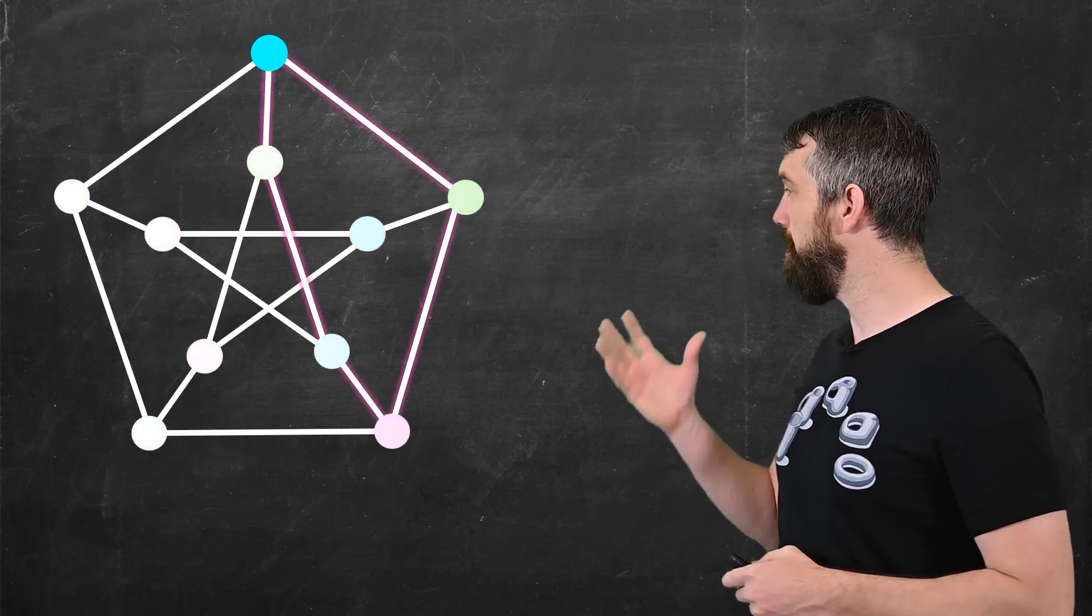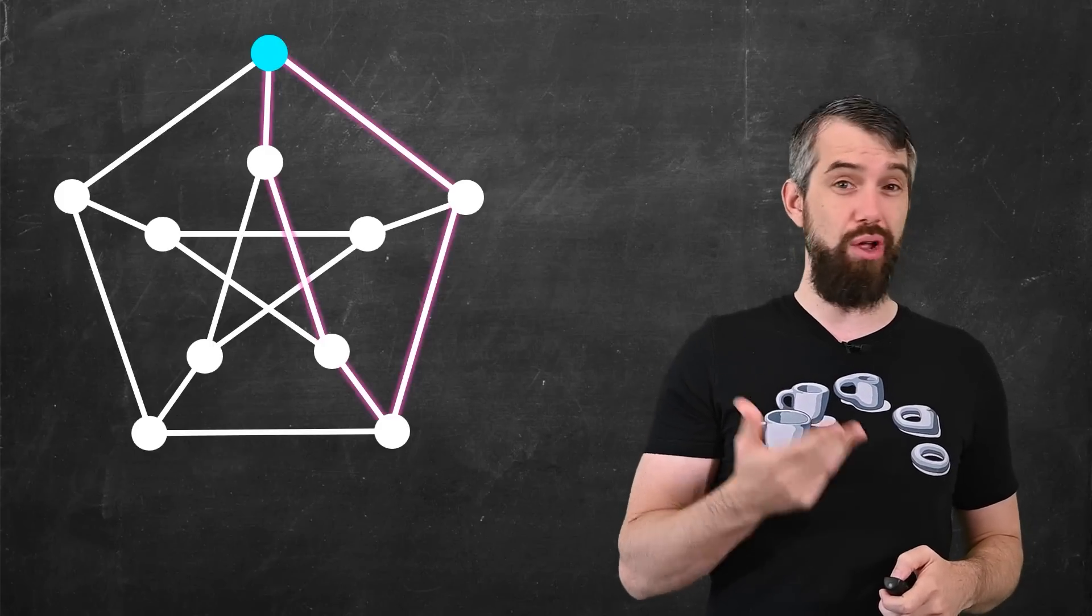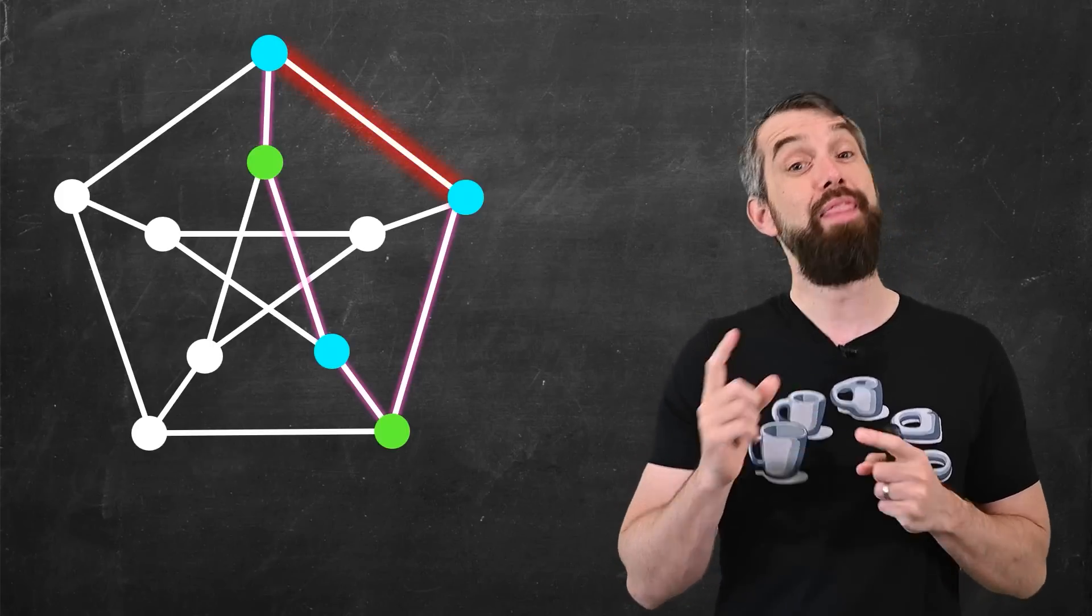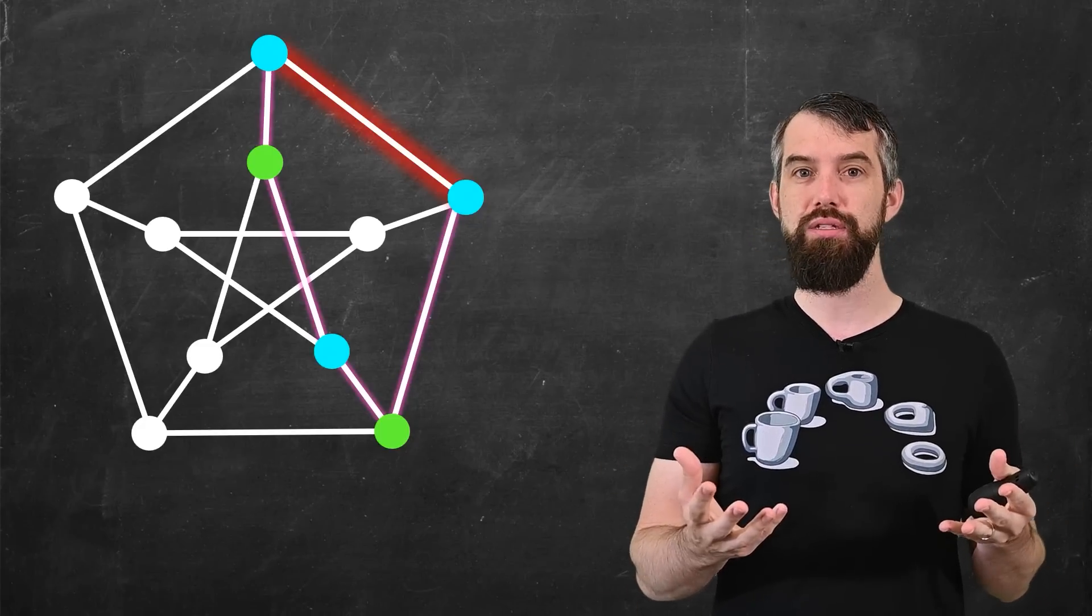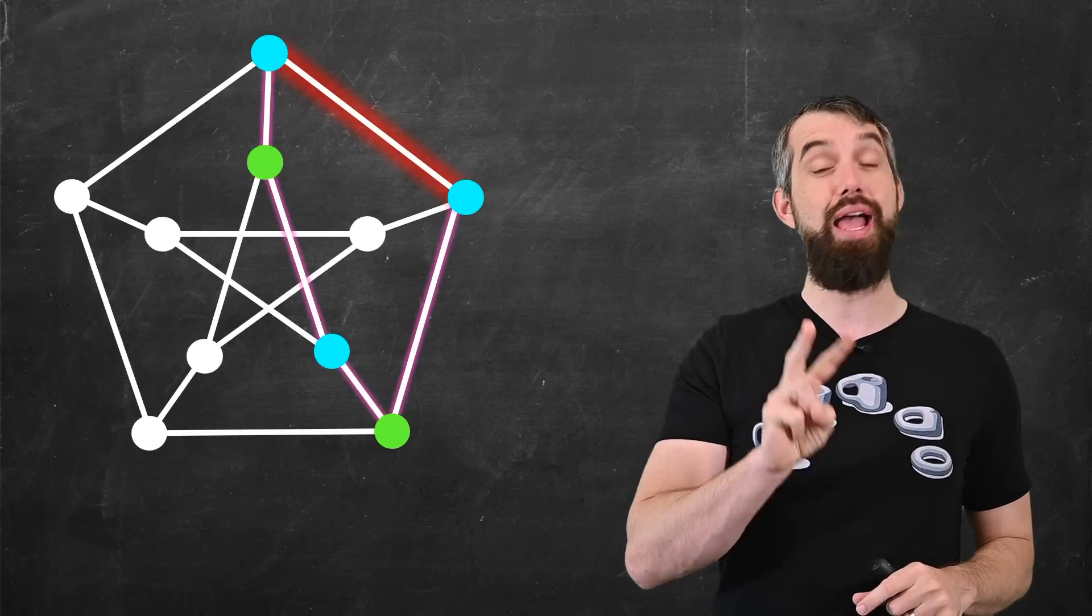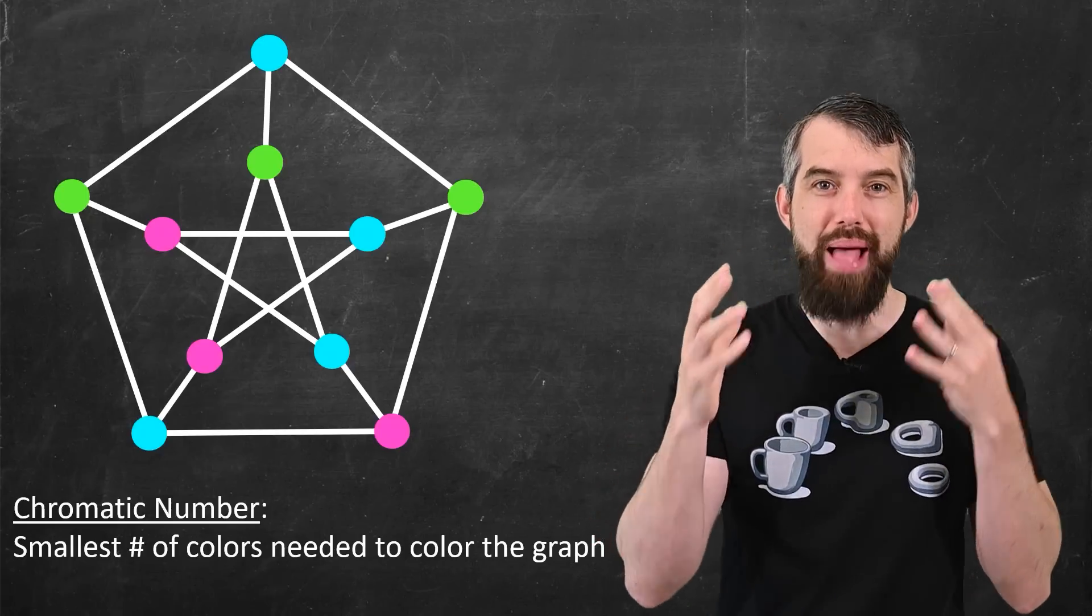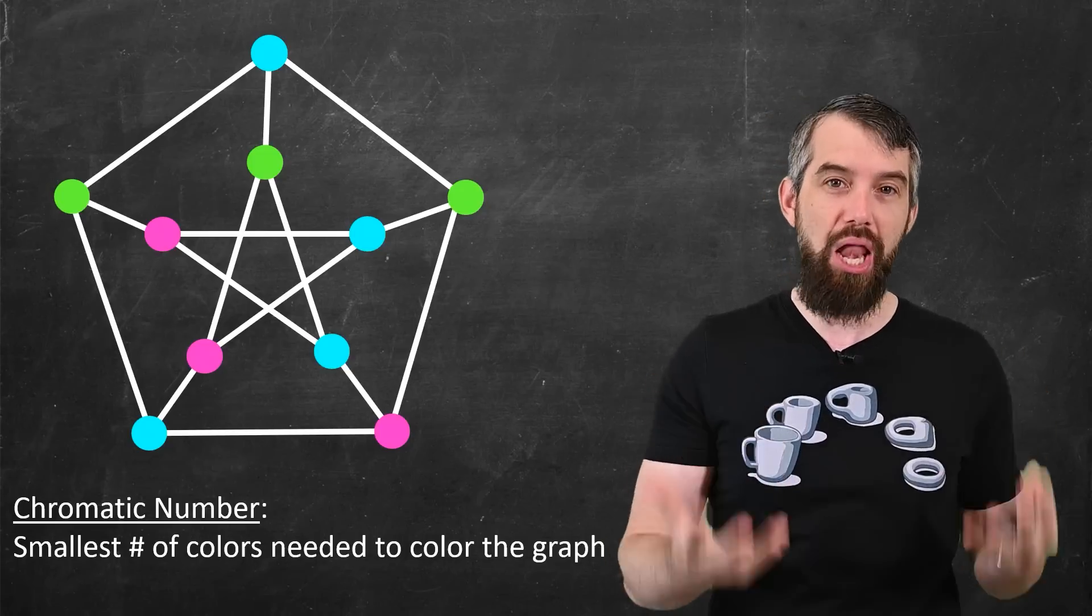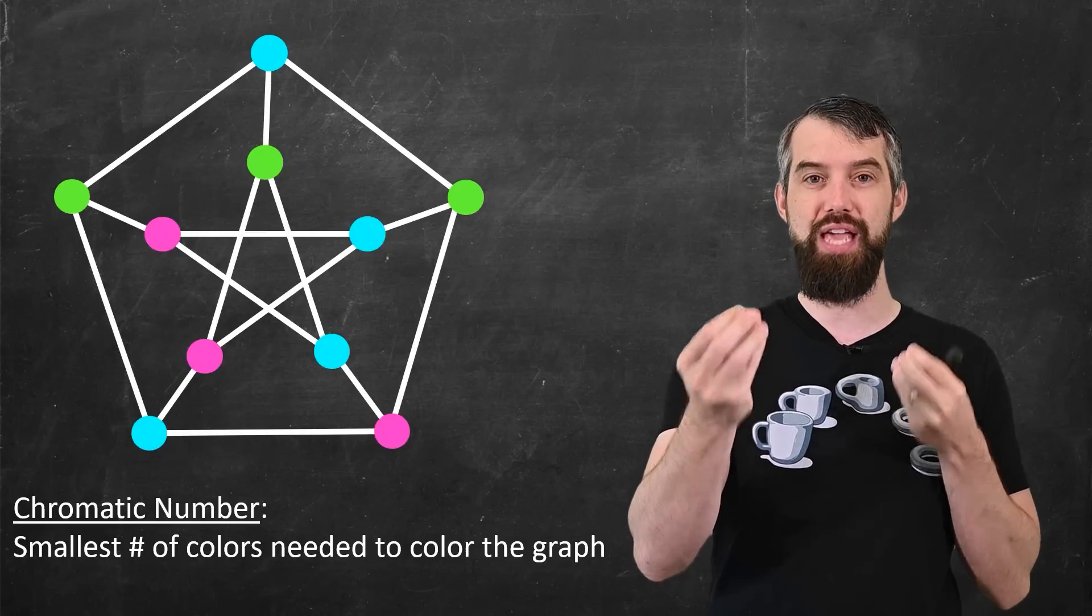For example, if I focus on this loop here, and let's imagine I only had two colors to work with. I'm going to go around the loop: blue, then green, then blue, then green, then blue, and that causes a problem. Now I've got an edge that has blue on both sides. So I cannot color this with only two colors. I have to color it with three. The name that I'm going to give for this is the chromatic number, and it is just the smallest number of colors that I need to color the graph under this condition that no edge has the same color on opposite ends.